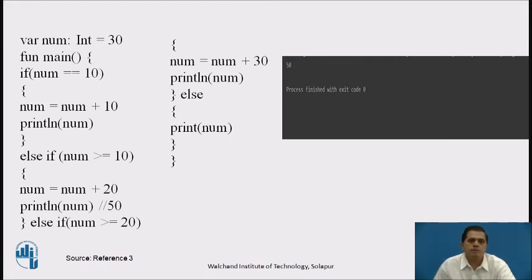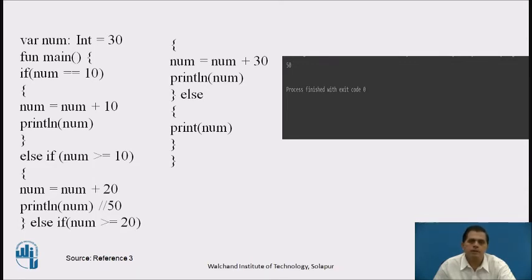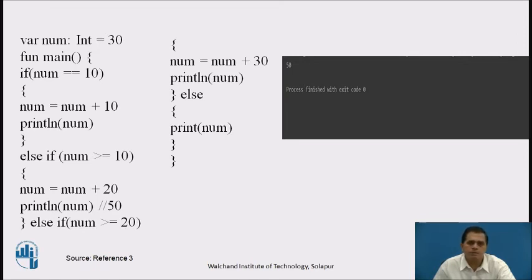Here is another example where num: Int = 30. In the main function: if (num == 10) then num = num + 10 and print num. Else if (num >= 10) then num = num + 20 and print num. Else if (num >= 20) then num = num + 30 and print num. Otherwise, if none of these conditions match, it will print only the num value. The appropriate block executes based on which condition is true.